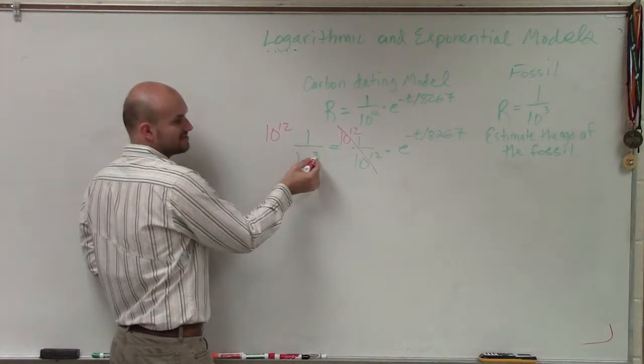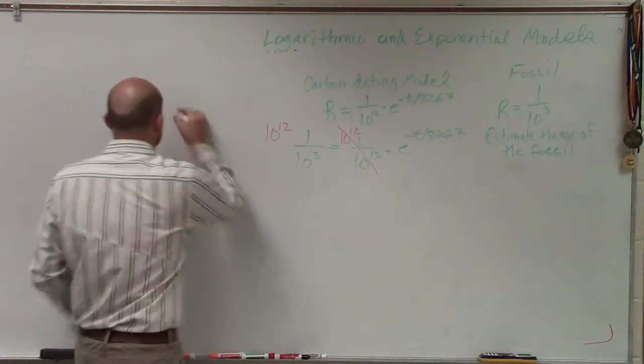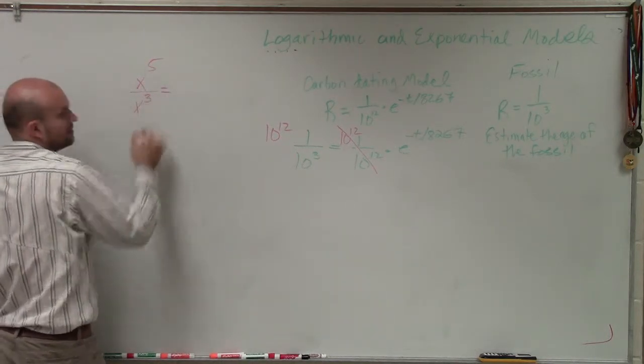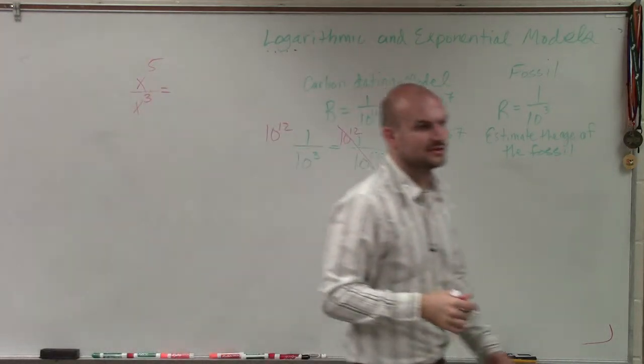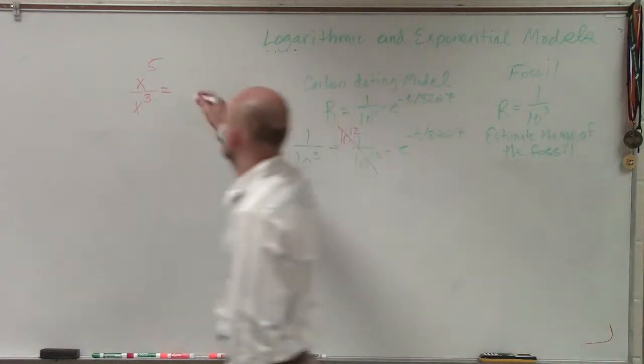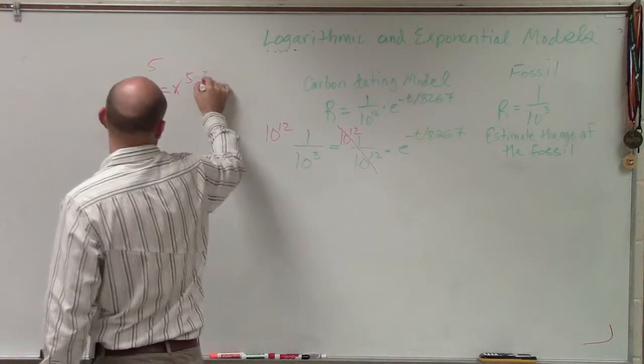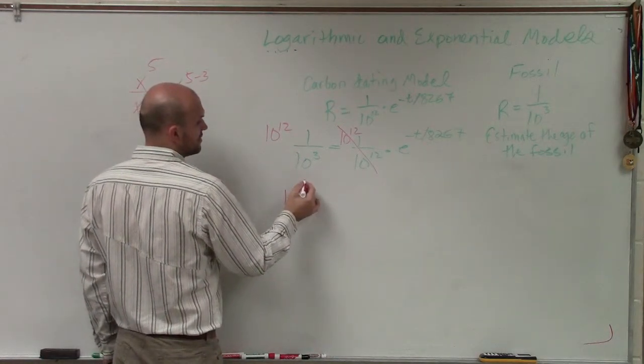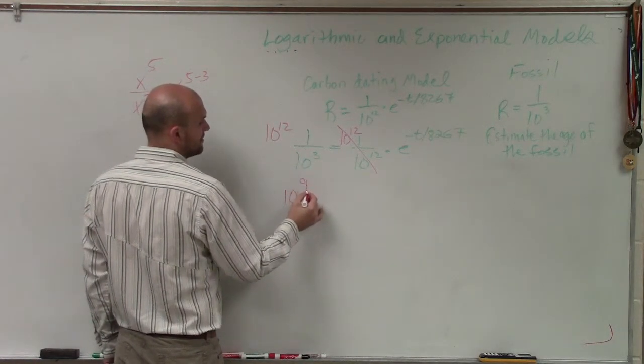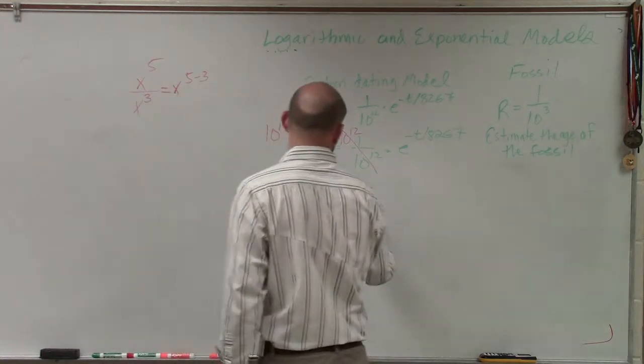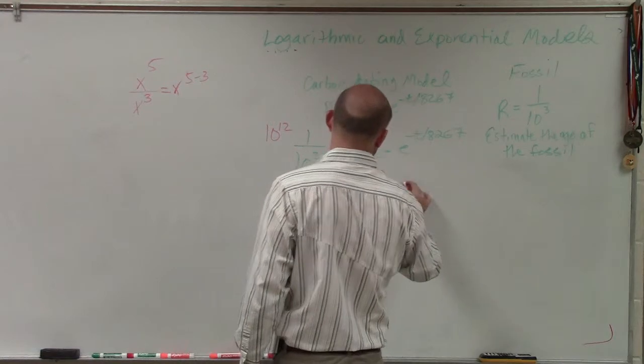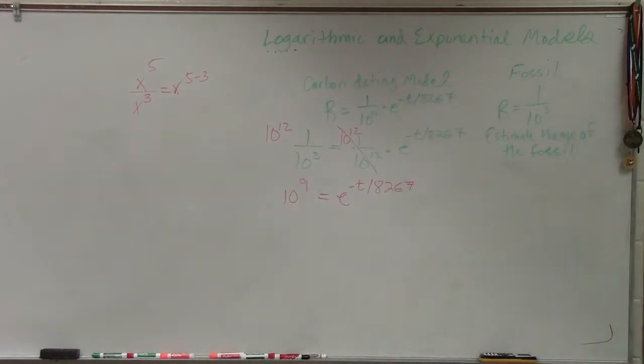10 over 12 divided by 10 to the third. Remember, what happens when you have exponent, when you divide? What happens when you have variables with exponents? What do you do with the exponents? You subtract them, right? So that's going to be x to the 5 minus 3. So therefore, this one, 12 minus 3, would be 10 to the 9th power equals e times negative t divided by 8,267. Did I actually use that right model?